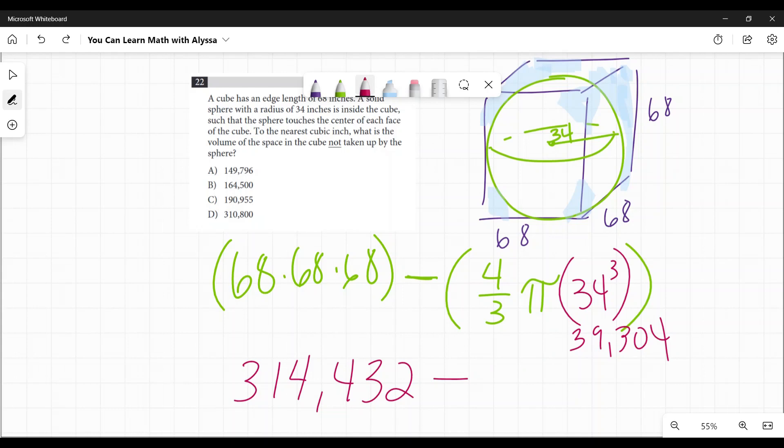So we get 52,405 and a third, then multiply that by pi, which is the pi button in your calculator. And you get approximately 164,636.21. Now, if you subtract that from 314,432, you're going to get 149,795.79, which can be rounded to 149,796. A is our answer.